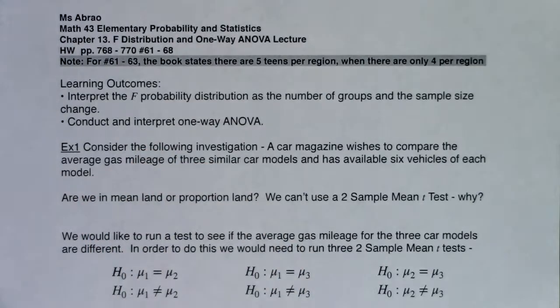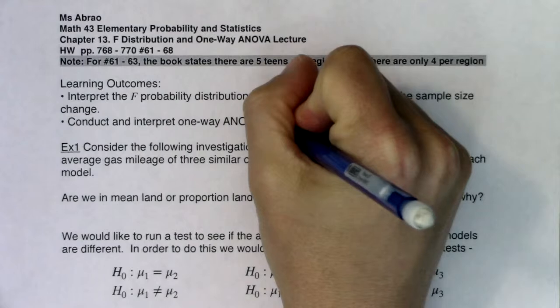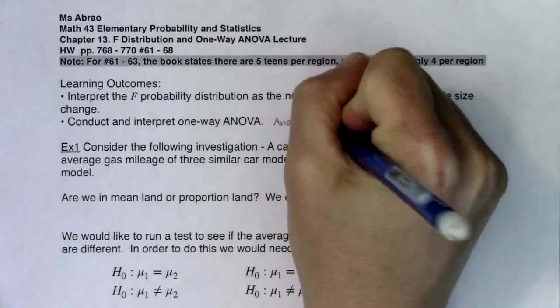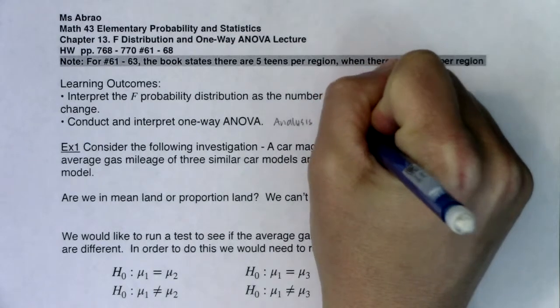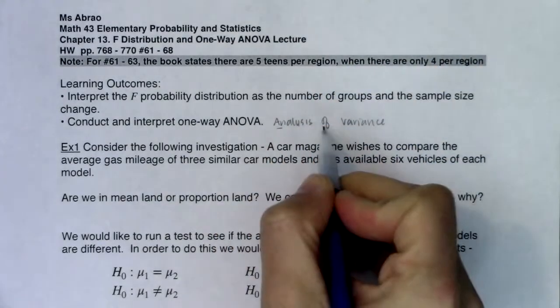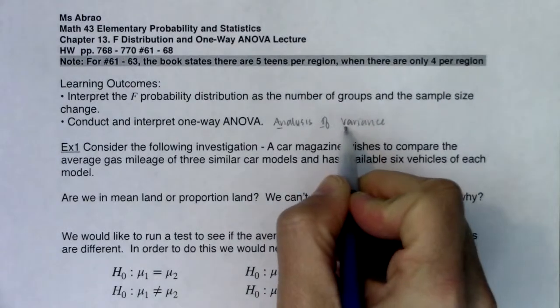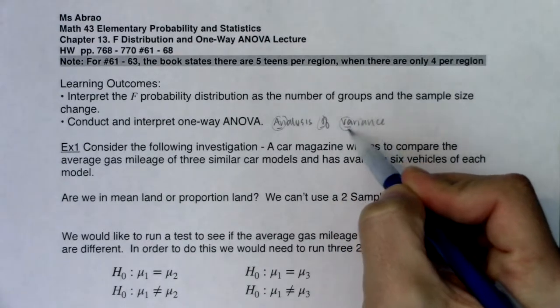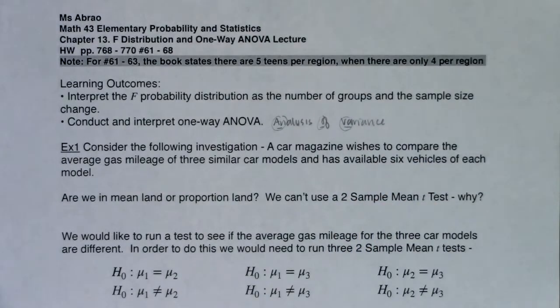Now ANOVA, it's an acronym. It stands for Analysis of Variance. So the AN comes from Analysis, the O comes from Of, and the VA comes from Variance. So that's why we call it ANOVA, or that's where it's coming from.